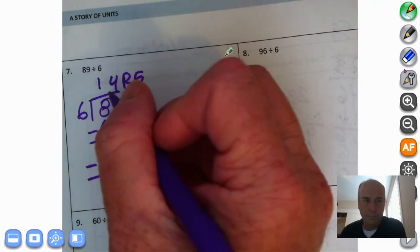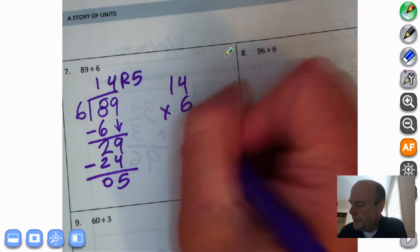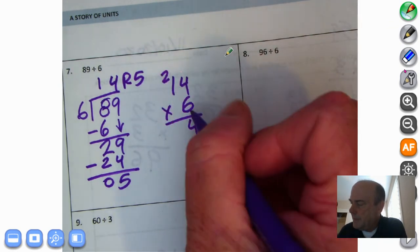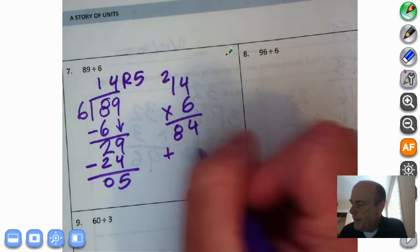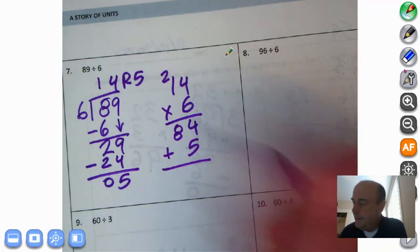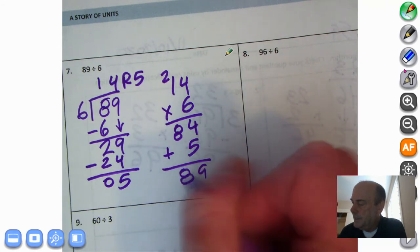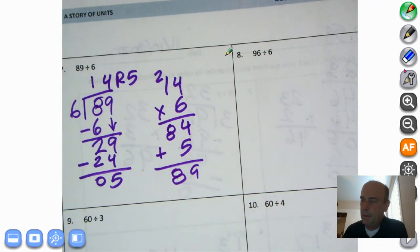Let's check. We're going to take the quotient and multiply it by the divisor. 14 times 6, we know that 4 times 6 is 24. Bring up the 2. 10 times 6 is 60, 70, 80. We have 84 plus 5, the remainder. 4 plus 5 is 9, and 8 plus nothing is 8. We get 89, and we are absolutely correct. Practice will make perfect.